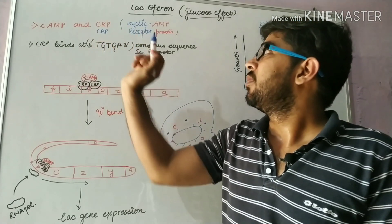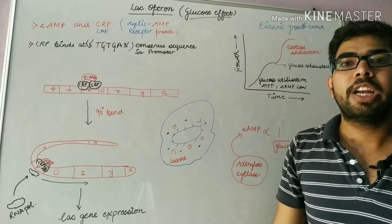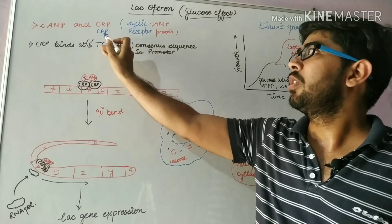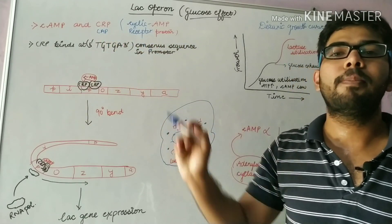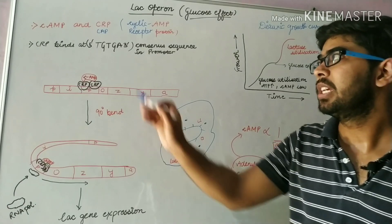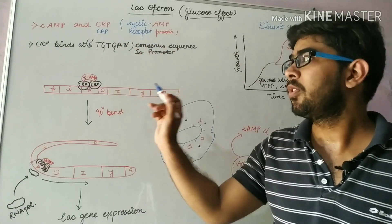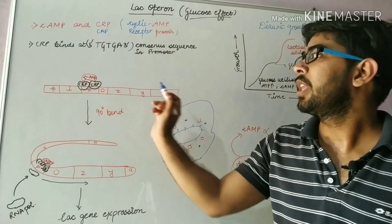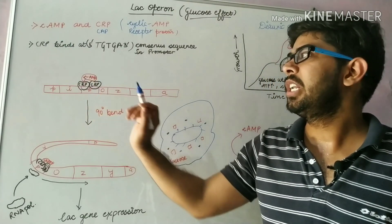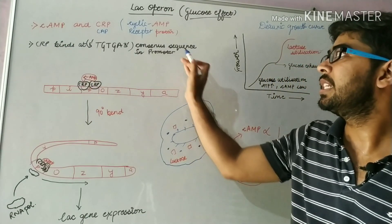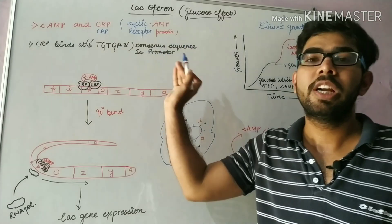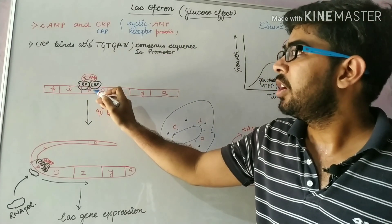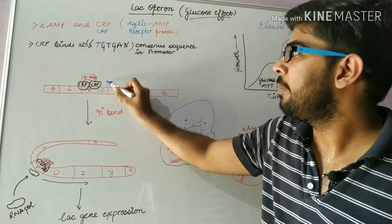CRP stands for cyclic adenosine monophosphate receptor protein, or it is also known as catabolite activator protein. First of all, this CRP protein binds to the promoter region in lac operon at the consensus sequence which is TGTGA. It will bind to the promoter in dimeric form.